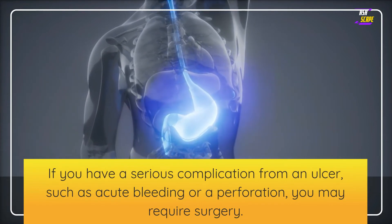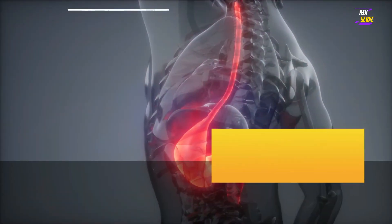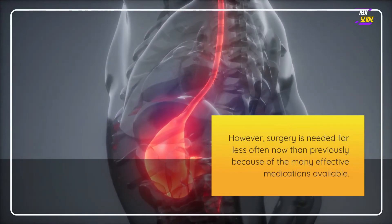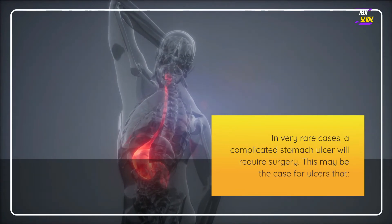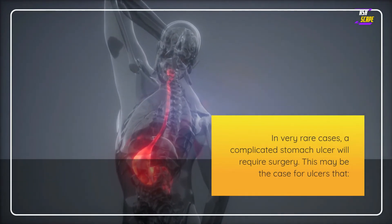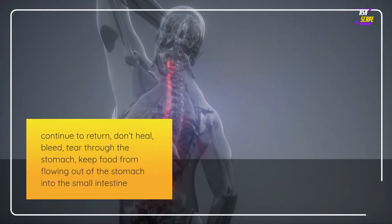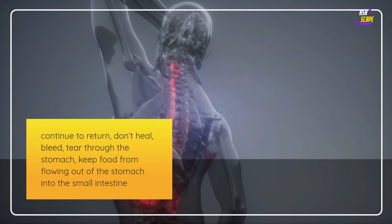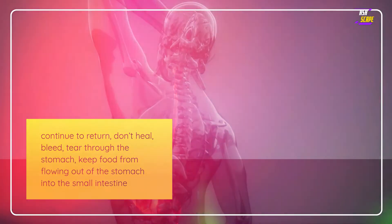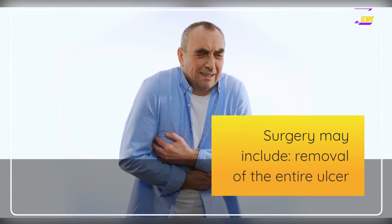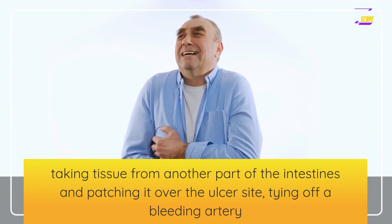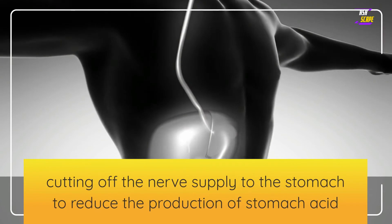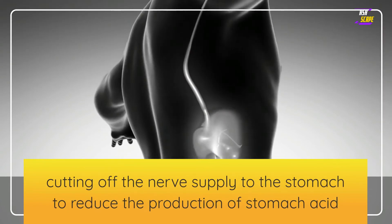If you have a serious complication such as acute bleeding or a perforation, surgery may be required — though surgery is needed far less often now because of many effective medications available. In very rare cases, a complicated stomach ulcer will require surgery for ulcers that continue to return, don't heal, bleed, perforate the stomach, or block food from flowing into the small intestine. Surgical options may include removal of the entire ulcer, patching the ulcer site with intestinal tissue, tying off a bleeding artery, or cutting the nerve supply to the stomach to reduce acid production.